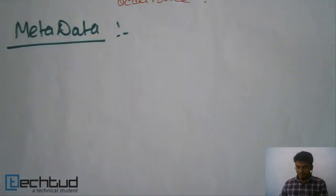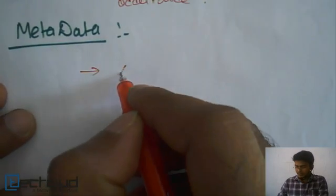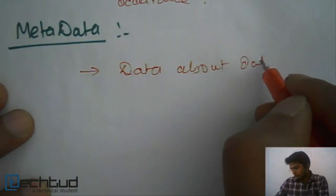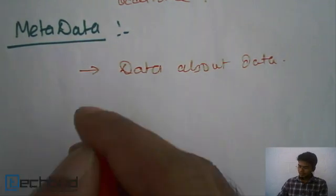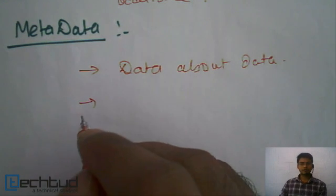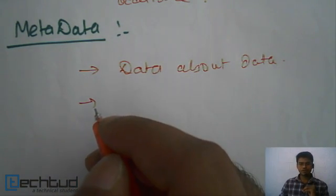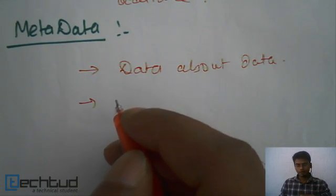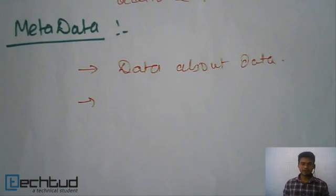Our next concept is metadata. In general, metadata is data about data. In database systems, when you create a database, the database system stores data about that database which you have created. This is called metadata.